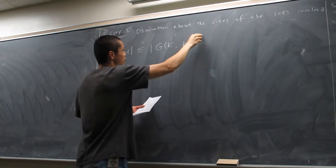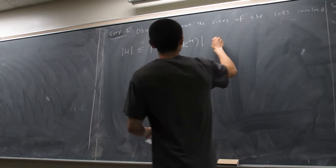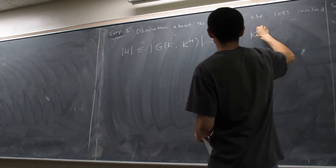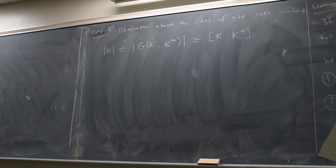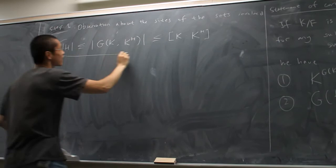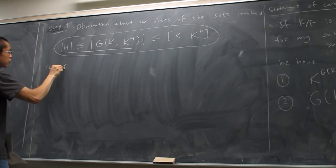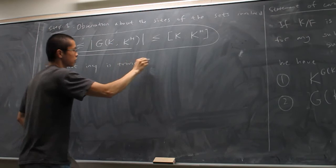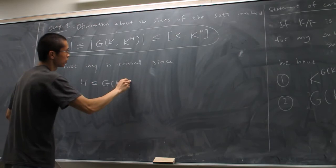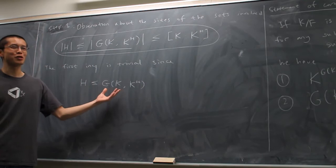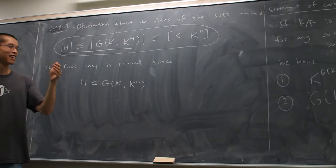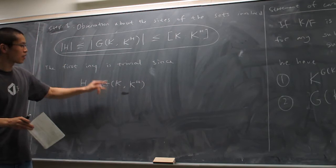This is a very important inequality. The first part — H ⊆ G(K/K^H) — is actually trivial, since G(K/K^H) is the set of all automorphisms that fix the set of all elements fixed by the automorphisms in H. Hence H is going to be one of them. Let h be in H. We want to show h is in G(K/K^H). To show that, we have to show h fixes everything in K^H. Let x be in K^H; we must show h(x) = x. But x is in K^H, so done.